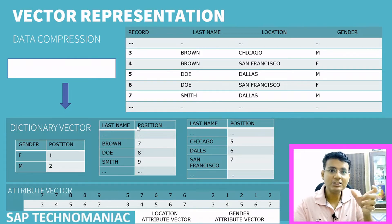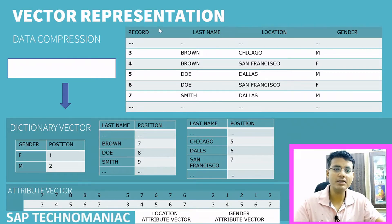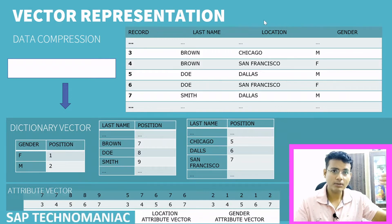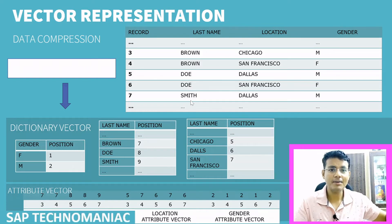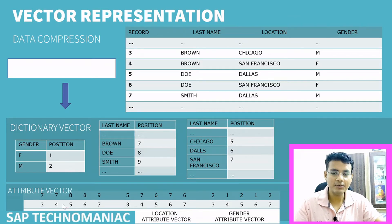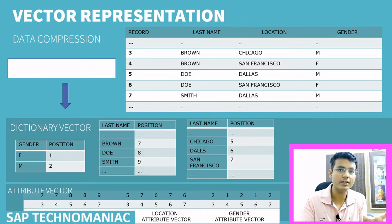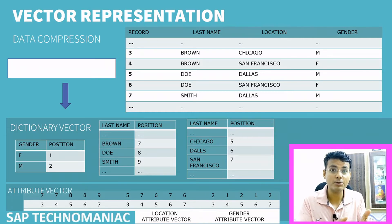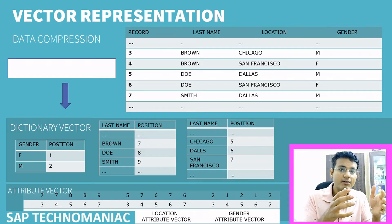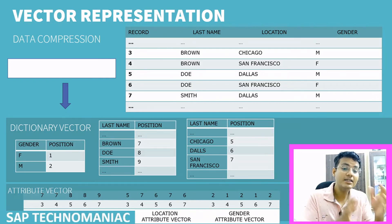Then, data is stored in the database in the form of an attribute vector, column by column. Since the database is a column store, instead of storing Brown, Brown, Doe, Doe, Smith, it will be stored as their corresponding numbers — for example, 7, 7, 8, 8, 9. Same way, the location data is also stored in the attribute vector as integers instead of strings.